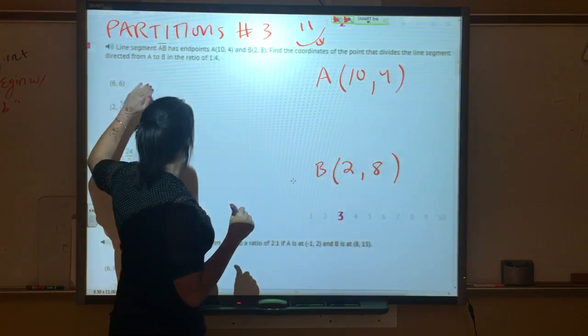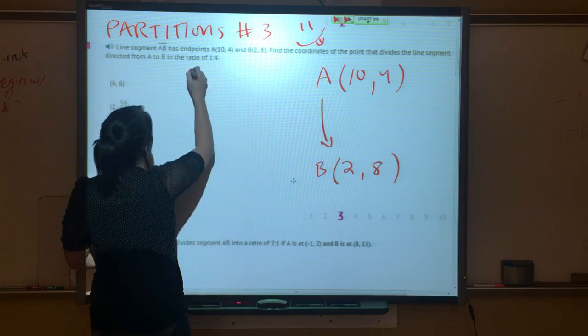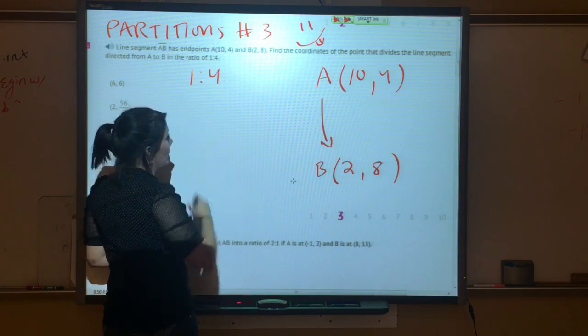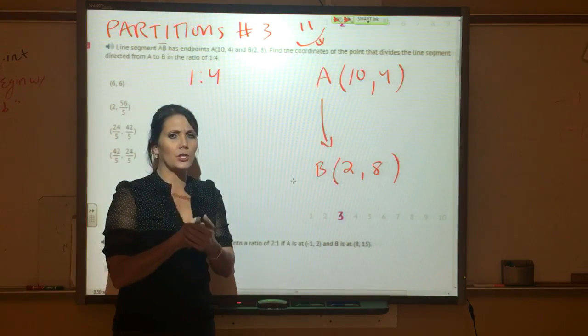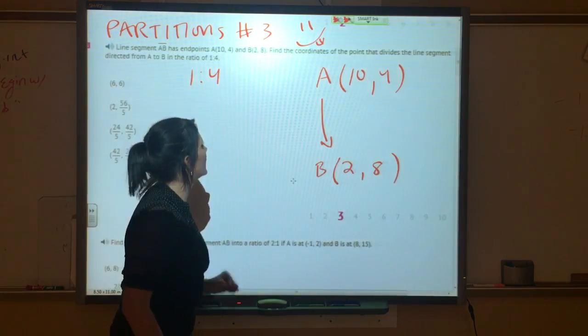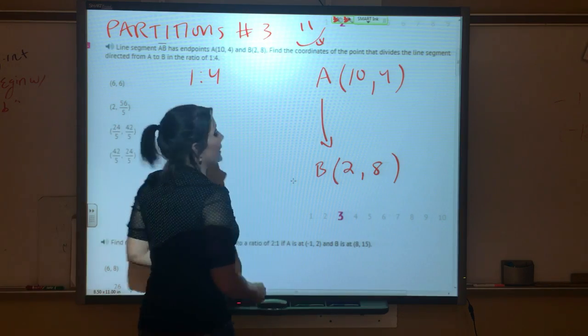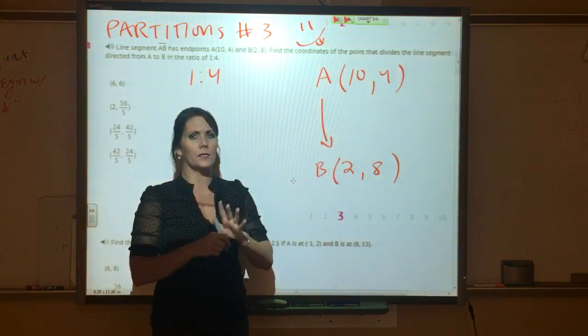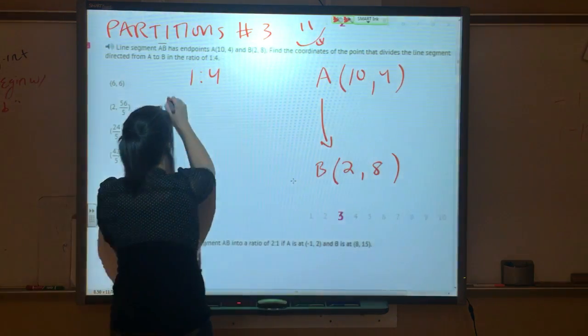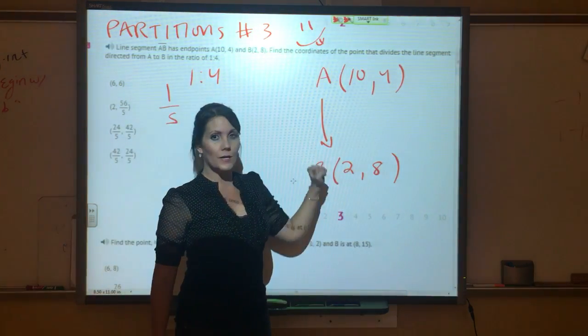Directed from A to B, so from here to here, in a ratio of 1:4. Okay, so you always have to be careful with these. Make sure you understand what is it asking us to find. So our ratio here is 1:4. That means the point we are looking for is going to be one-fifth of the way from here to here.